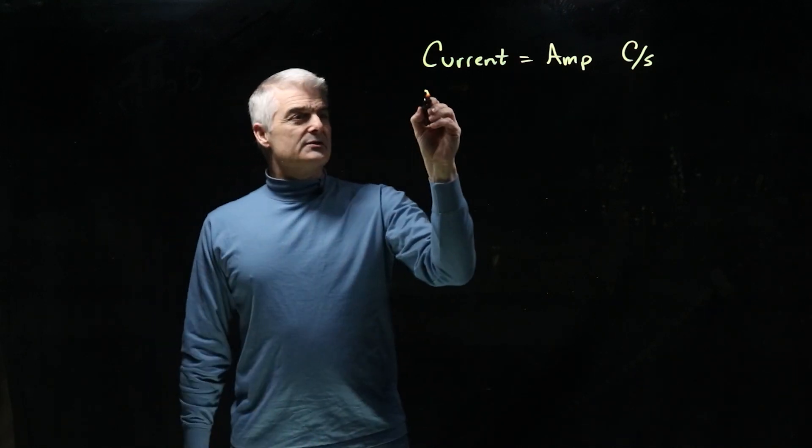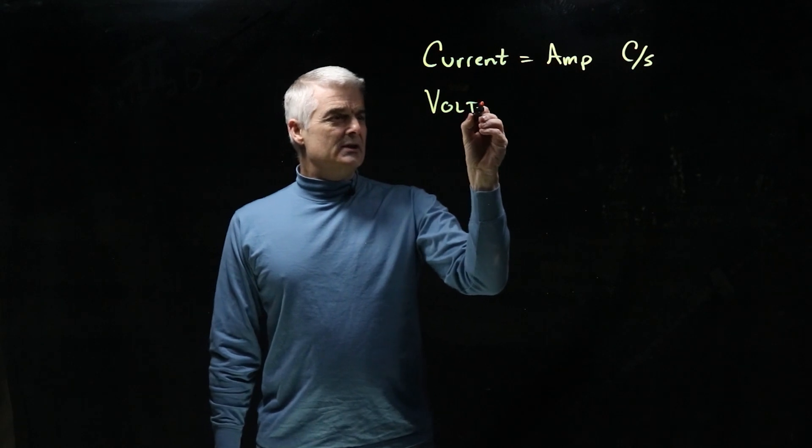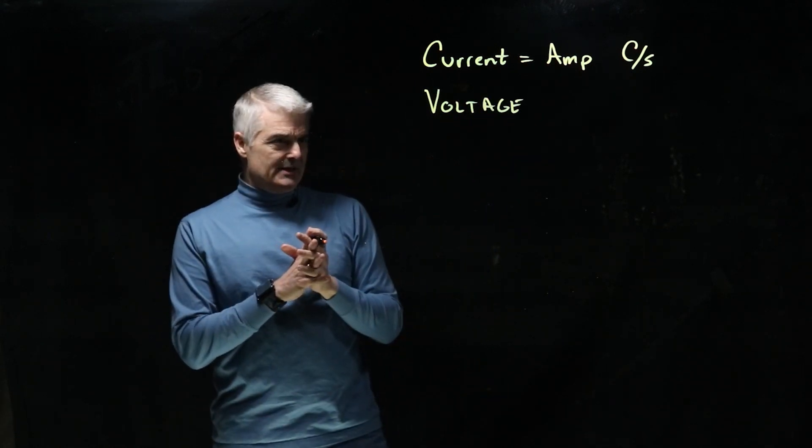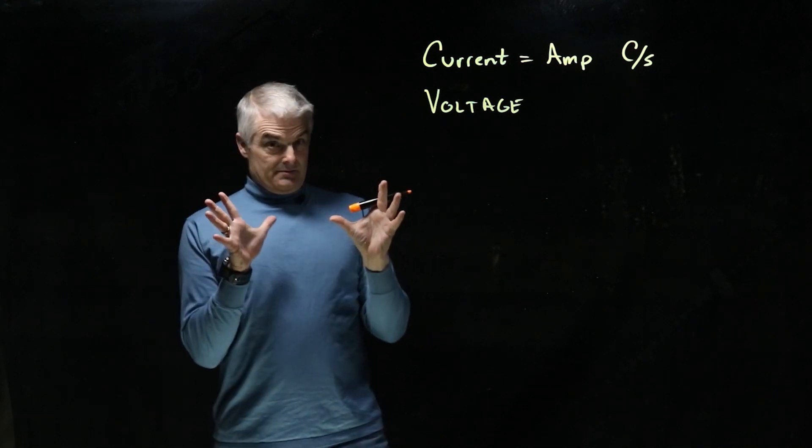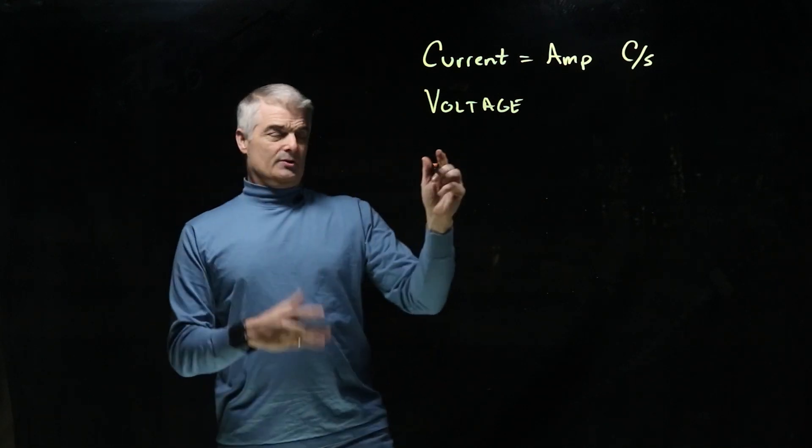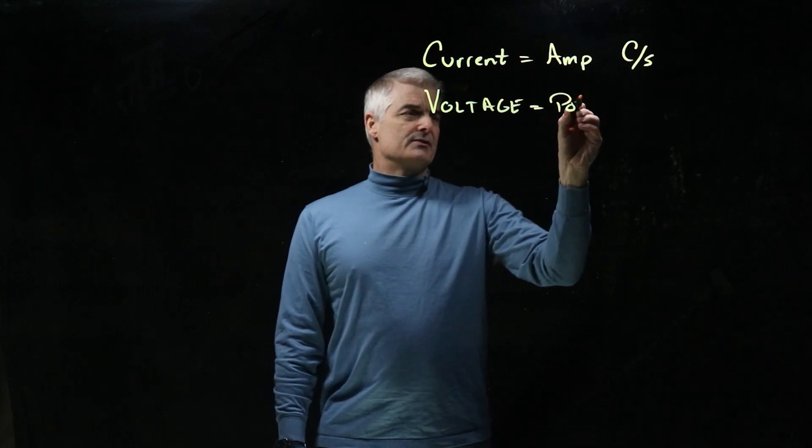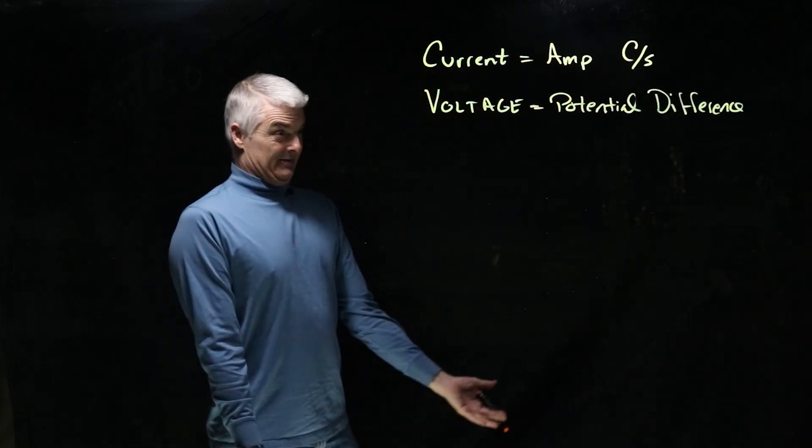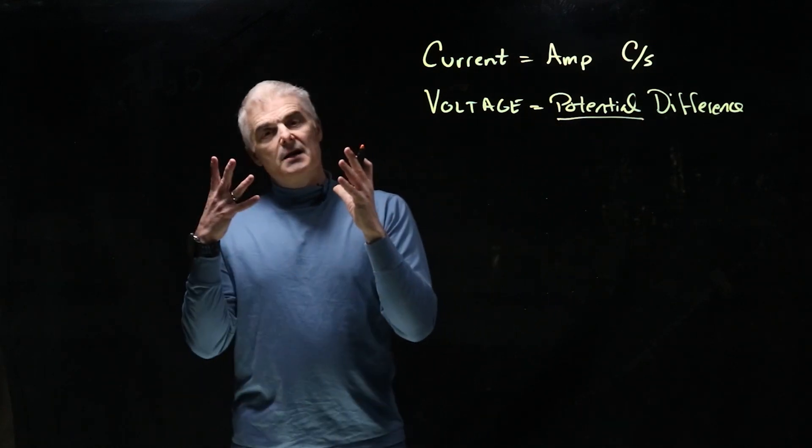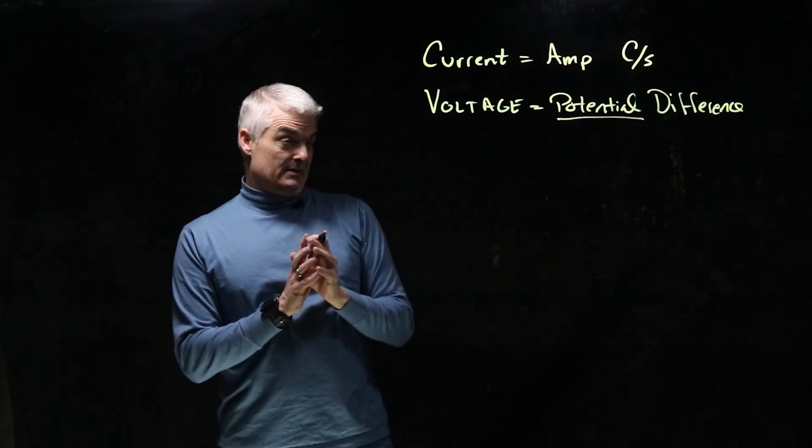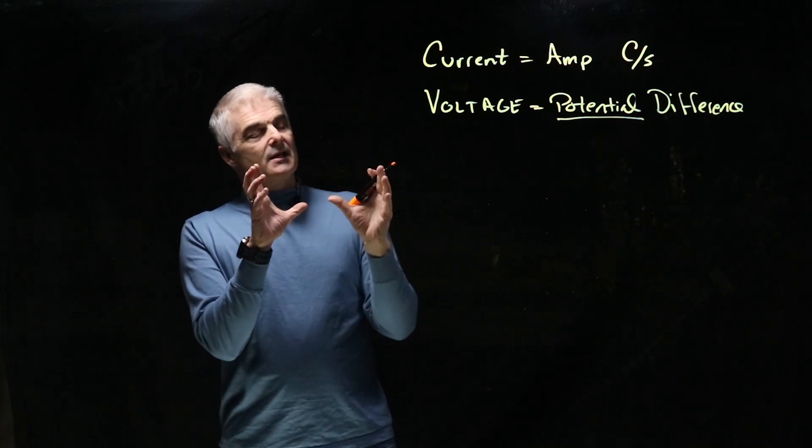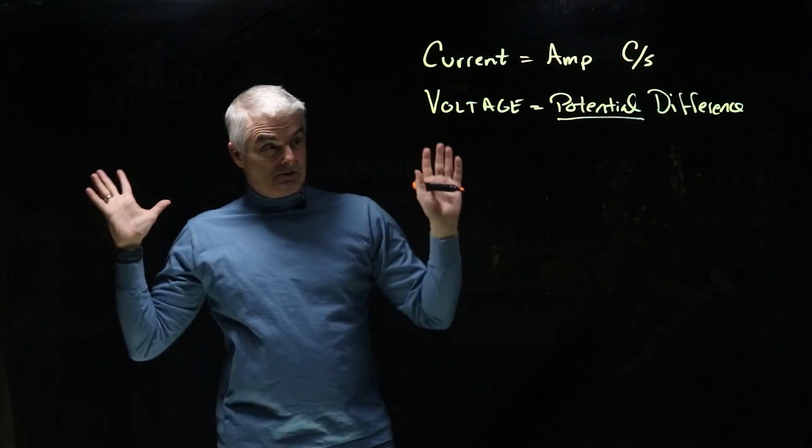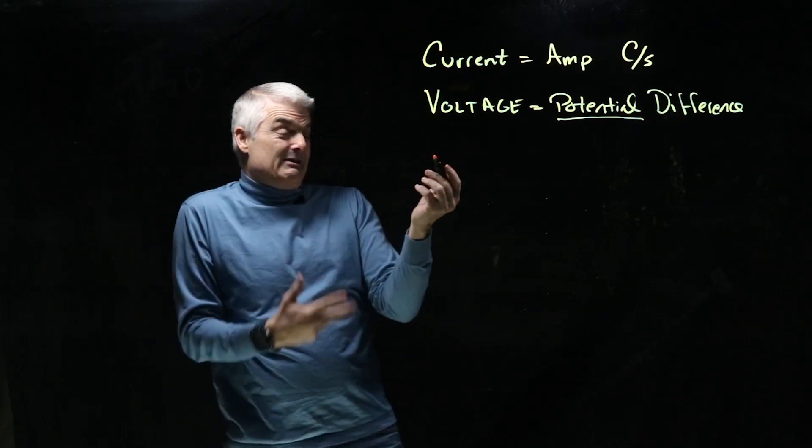But the thing that you all have heard of is this thing called voltage. Now voltage is probably the most confusing thing to understand in all of electricity, I think, because it's like the potential. It's called the potential difference. What the heck does that mean? Well, as it turns out, it comes from the word potential energy. And I think the best way to understand voltage, you probably know there's 9 volt batteries and 1.5 volt batteries. You've heard of all that stuff, but what does it mean?